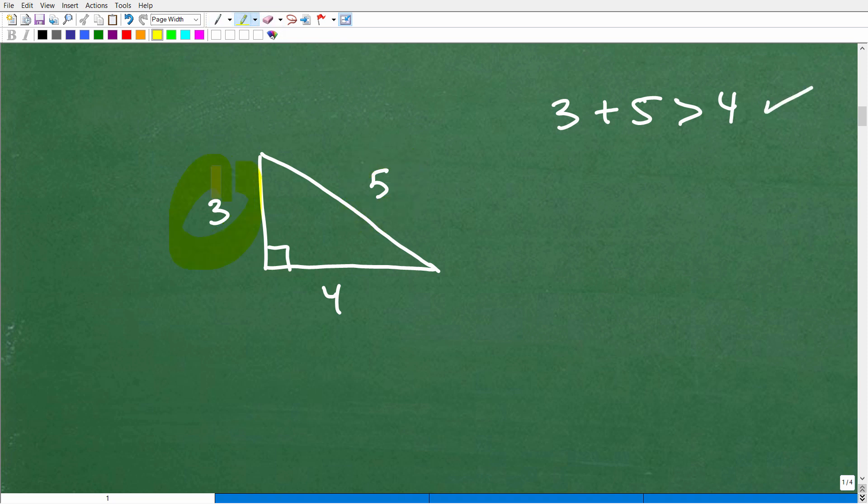So we'll just take another two pair here, two sides. So 3 and 4. So 3 plus 4, is that greater than that other side? 5. Well, 3 and 4, 7. Yes, that 7 is greater than 5. That checks.